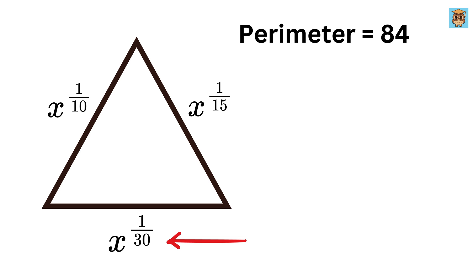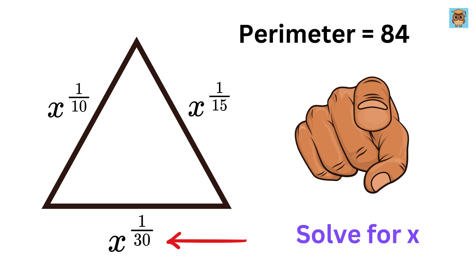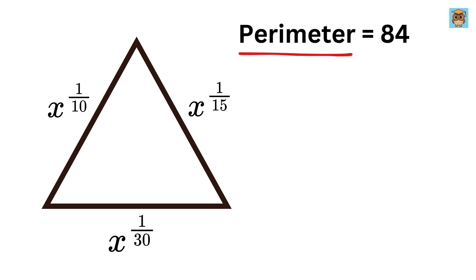Using only this much information, can you find the value of x? Okay, we know that the perimeter of a triangle is just the sum of all its sides. Since the perimeter is already given as 84, we can set up an equation by adding all the sides together and making it equal to 84.